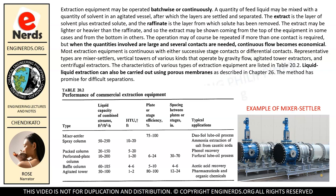The operation may of course be repeated if more than one contact is required, but when the quantities involved are large and several contacts are needed, continuous flow becomes economical. Most extraction equipment is continuous with either successive stage contacts or differential contacts. Representative types are mixer settlers, vertical towers of various kinds that operate by gravity flow, agitated tower extractors, and centrifugal extractors.